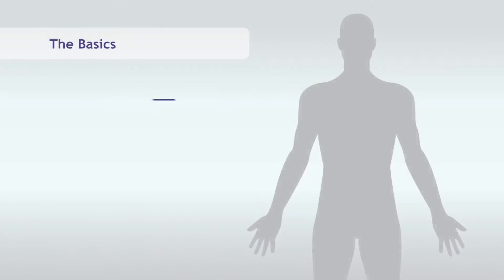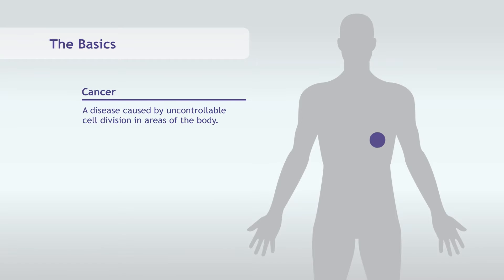Common terms to know include: Cancer is a disease caused by cells in a part of the body that divide uncontrollably. If left untreated, it can spread to other areas of the body.